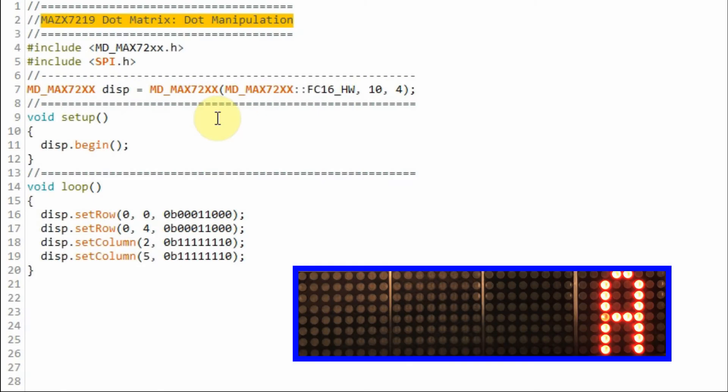Let's have a look at the code needed to sketch the letter A on the module. We need to include this MAX7219 library. And we need to declare this object to the library. We need to initialize the object. And within the loop function, these are the four statements needed to sketch the letter A on the module.